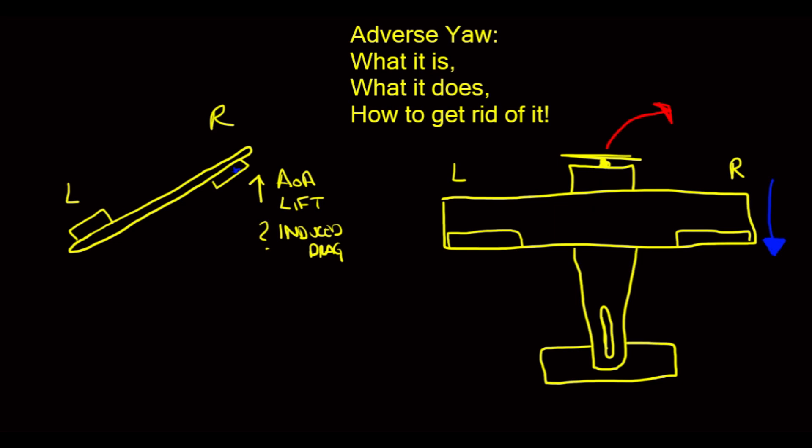So what we have to do is, as we roll into the bank, as we roll into this increase of angle of attack and lift and induced drag and all that stuff, we need to counteract this adverse yaw. There it is. That's what it is. Adverse yaw is that turning movement in the opposite direction of our bank.